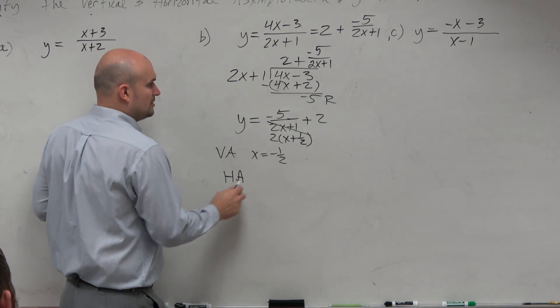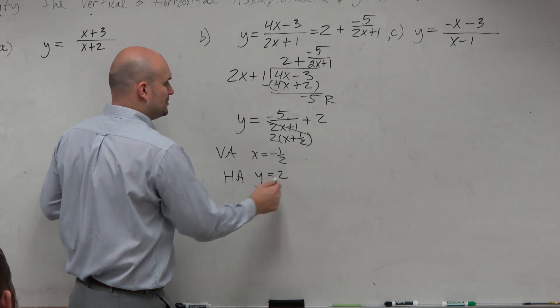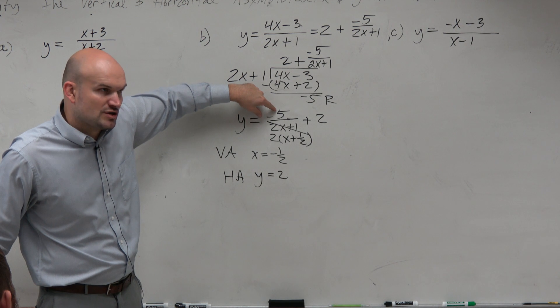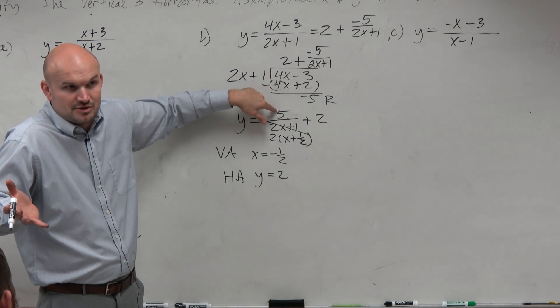My horizontal asymptote, the graph is being shifted up 2, so it's now at y equals 2. Again, the reflections and the vertical stretch are not affecting my asymptotes. They affect the graph, but they're not affecting the asymptotes, okay?